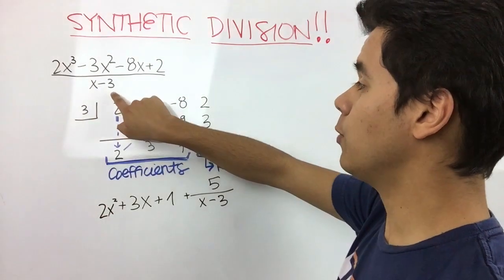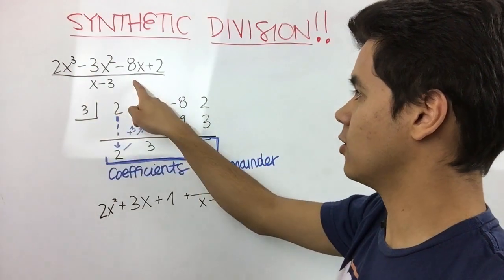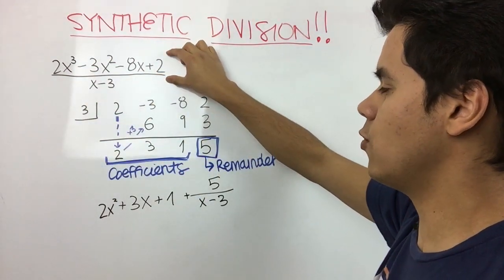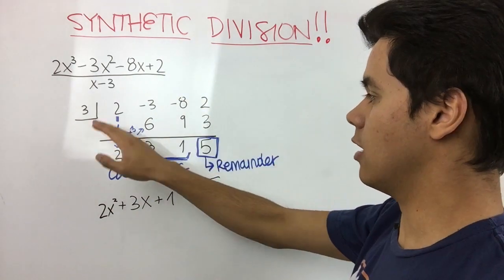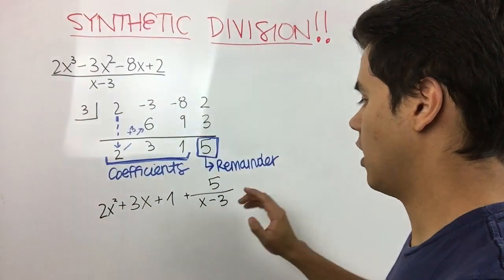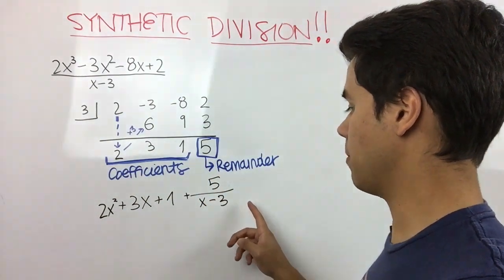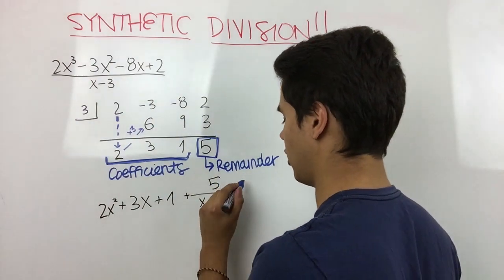So this polynomial took this 2 and divided it, took this 3 and divided it, and took this 8 and divided it. But when it came to this positive 2, it wasn't able to divide it. So when it did all the division process, we ended up with this 5 divided by x minus 3, but this just simply didn't take place. And this is what we're going to call our answer.